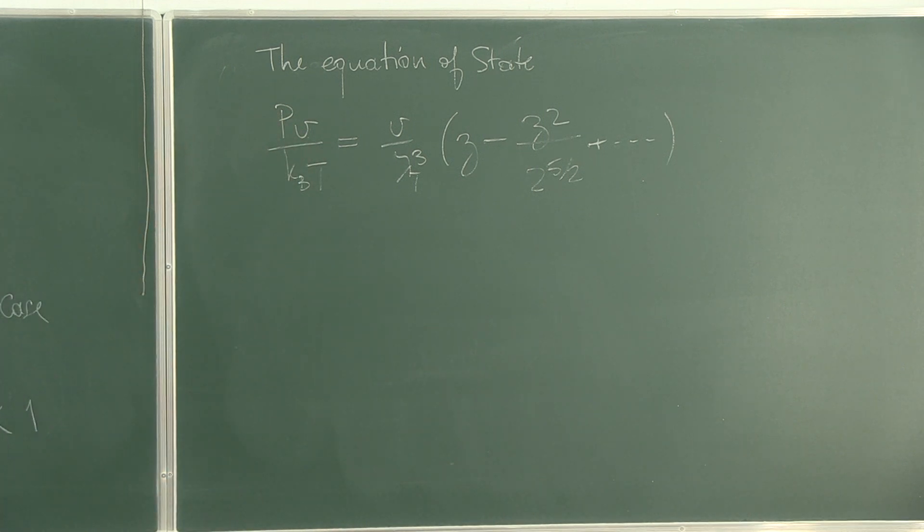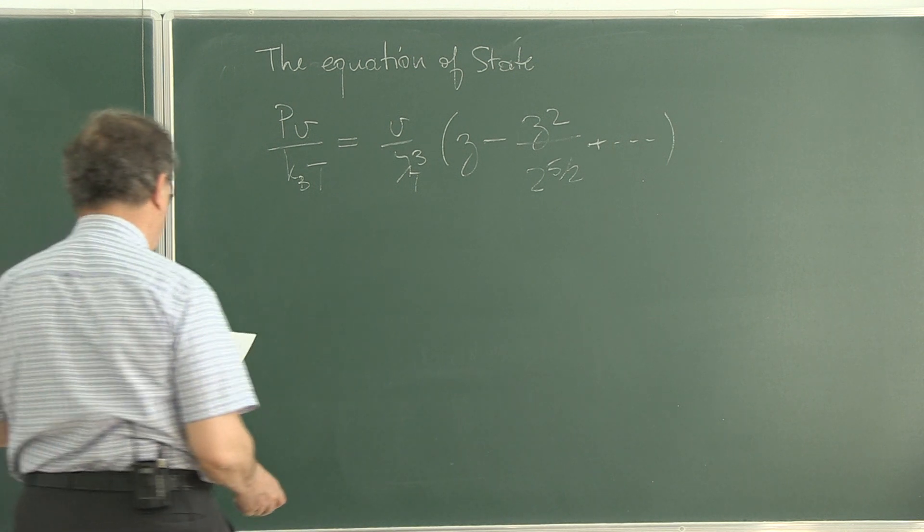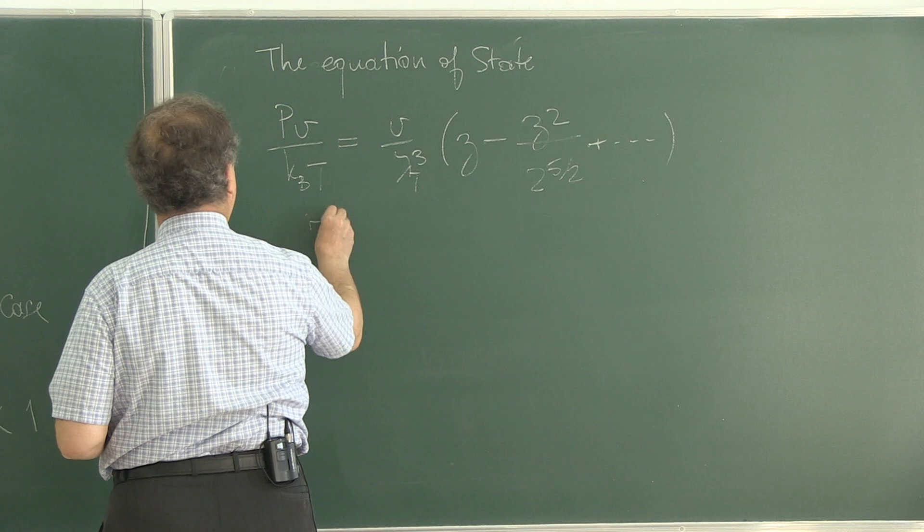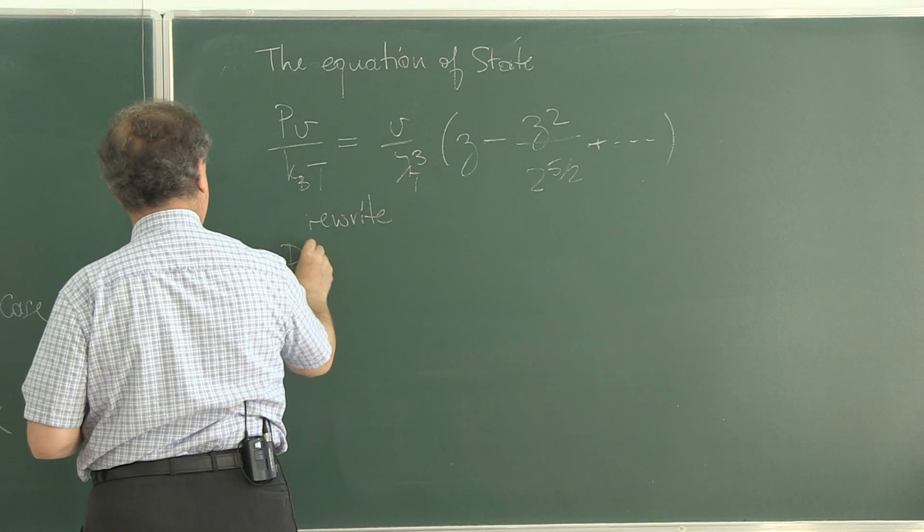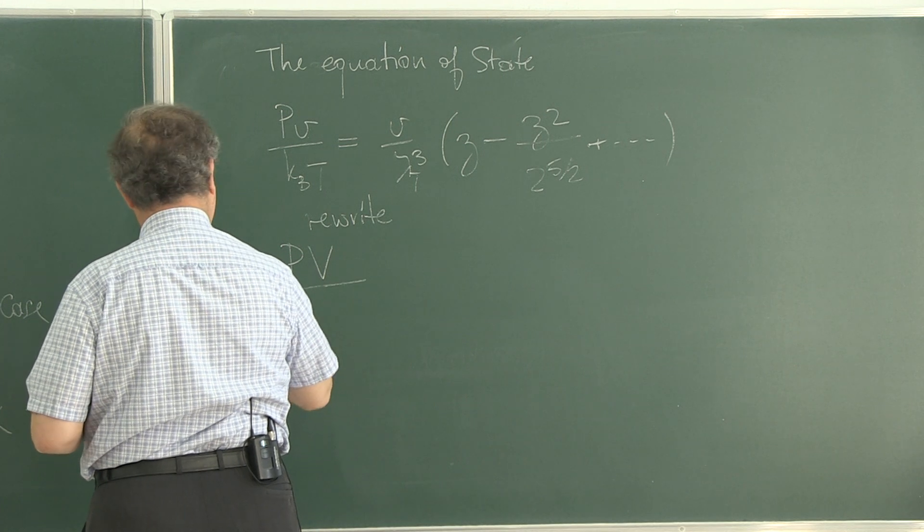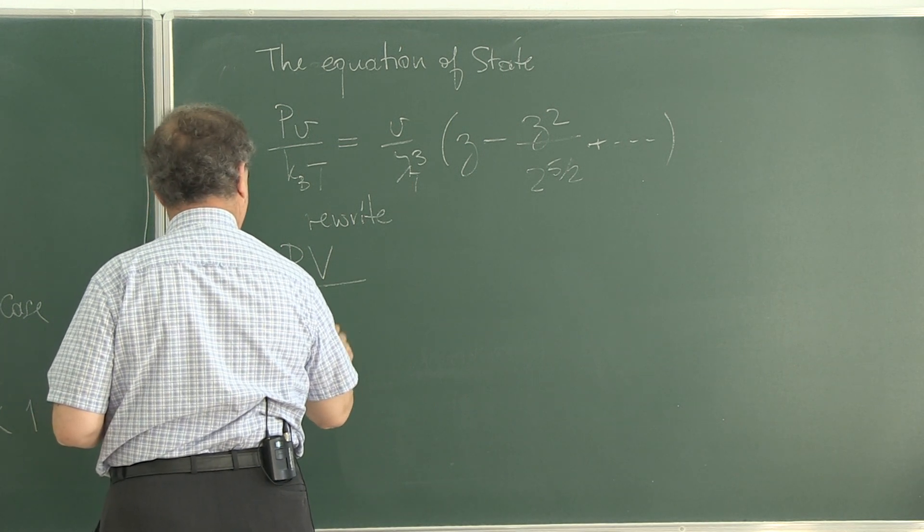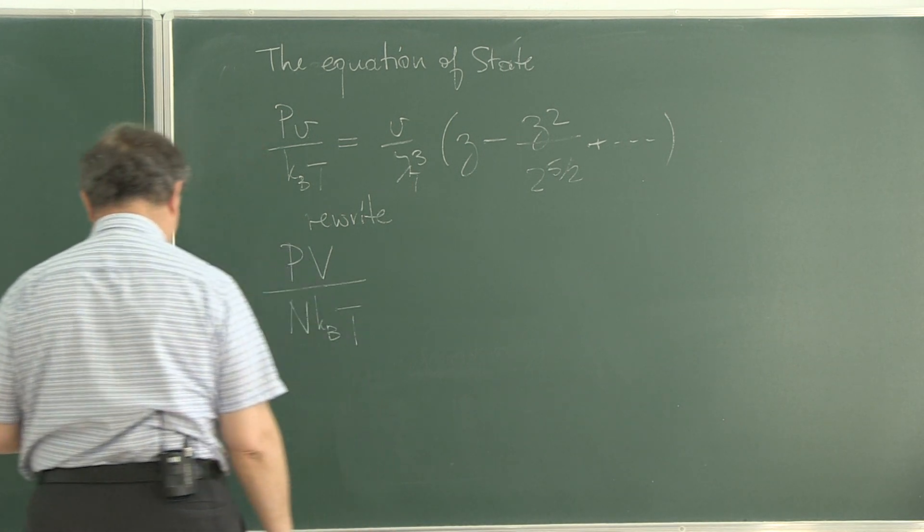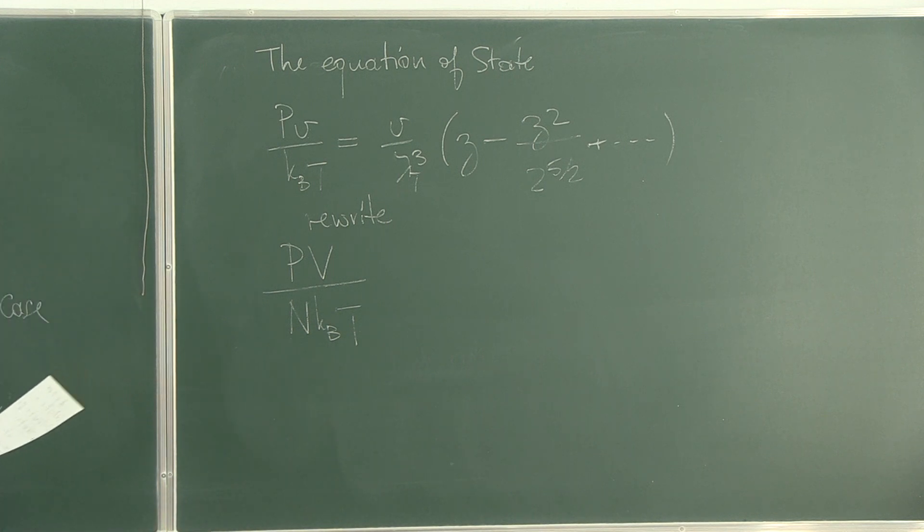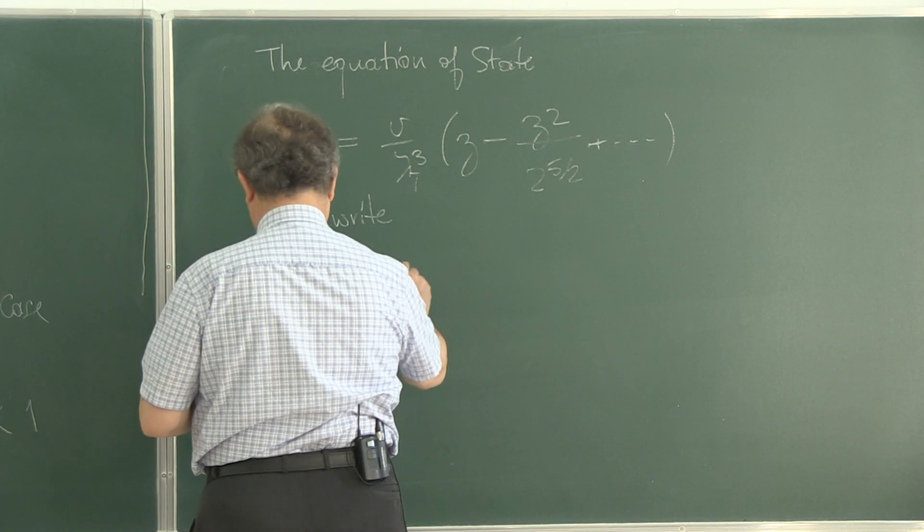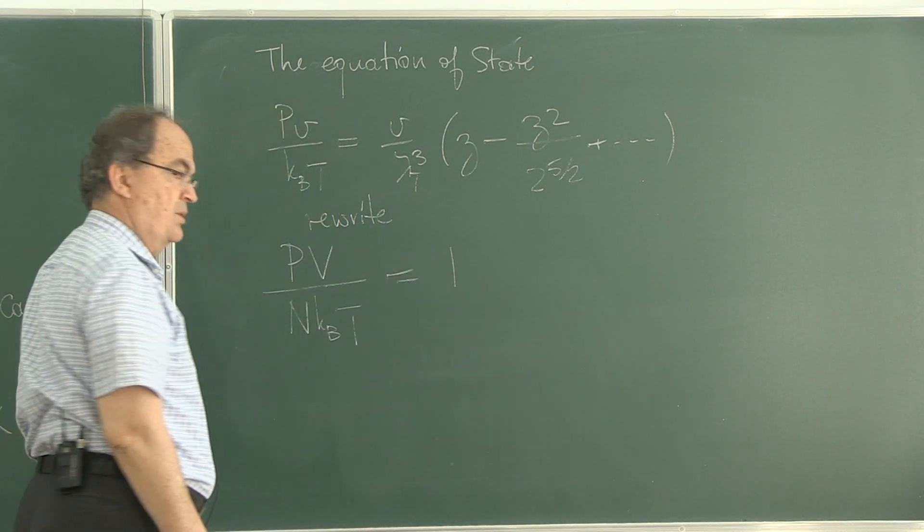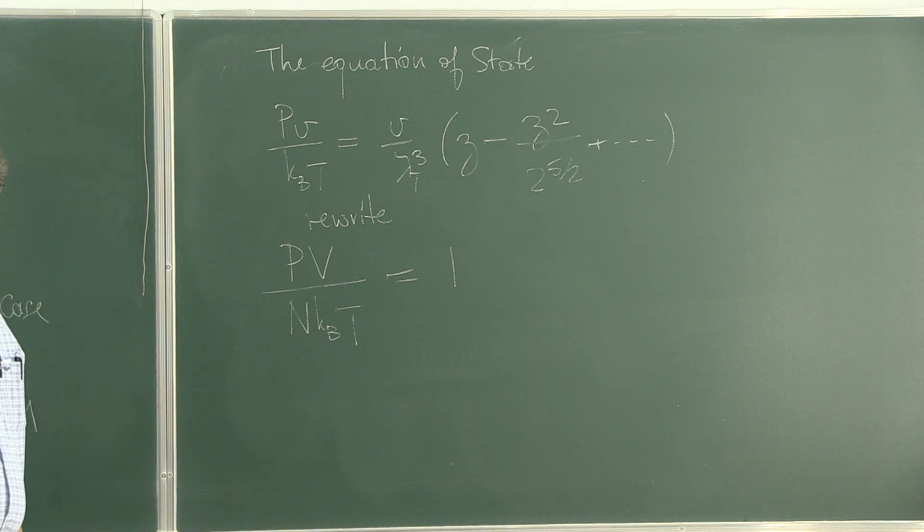You can rewrite this as in the notes. As pv over n kB T. That comes out to be in this limit 1, which is the classical result, isn't it?